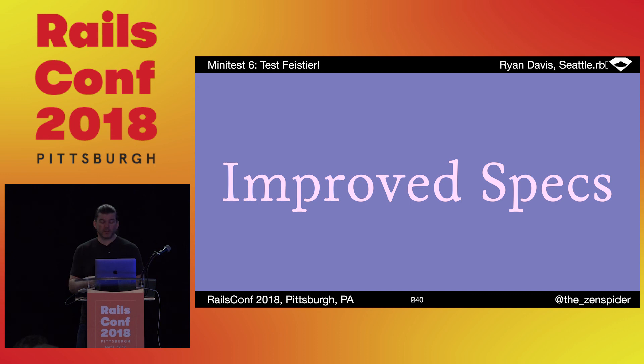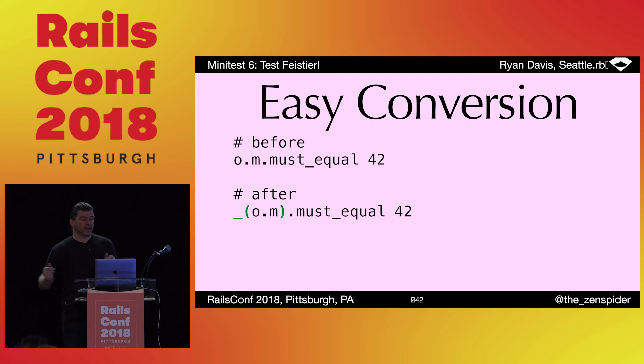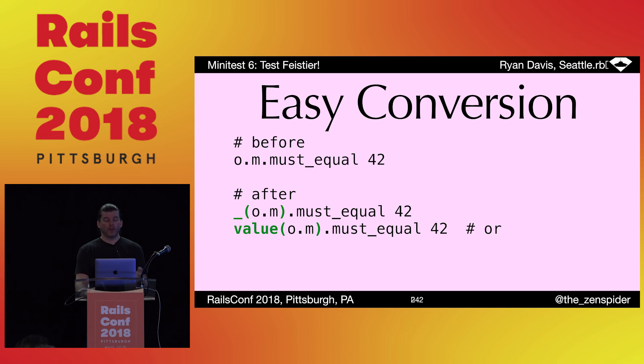Specs have gotten cleaned up a bit. Since expectations are just assertions, all those improvements to assertions also apply. But I've also deleted all many expectations from Object — whereas before you just called must_equal directly, now you have to use a wrapper to call it. I prefer underscore to wrap the expected value because it's short and gets out of my way visually, but the word 'value' is a bit more descriptive, and honestly I think 'expect' is terrible, but it's there too. This cleans up the global namespace a lot.